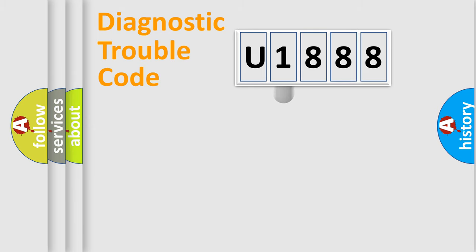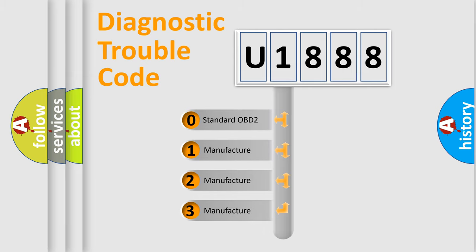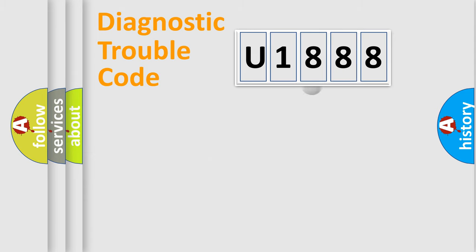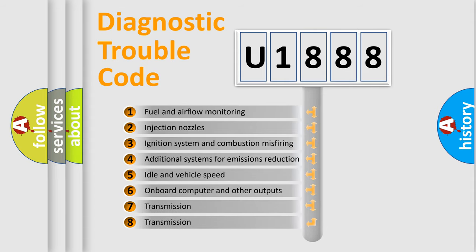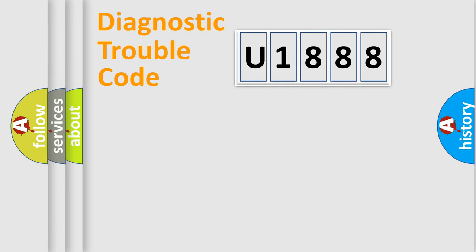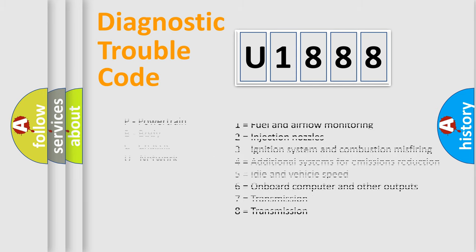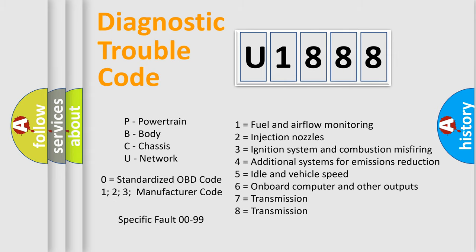This distribution is defined in the first character of the code. If the second character is expressed as zero, it is a standardized error. In the case of numbers 1, 2, or 3, it is a manufacturer-specific error. The third character specifies a subset of errors, and this distribution is valid only for the standardized DTC code. Only the last two characters define the specific fault of the group.